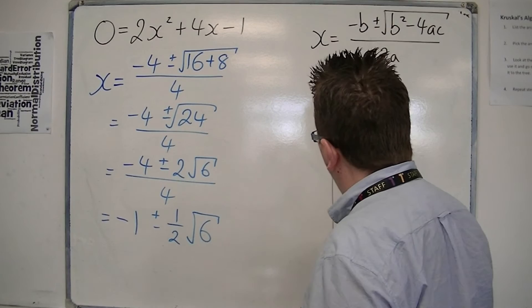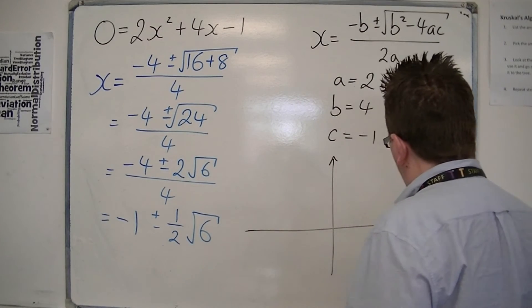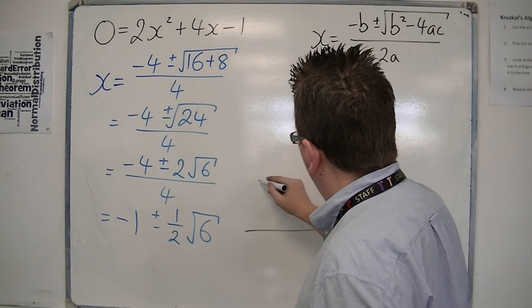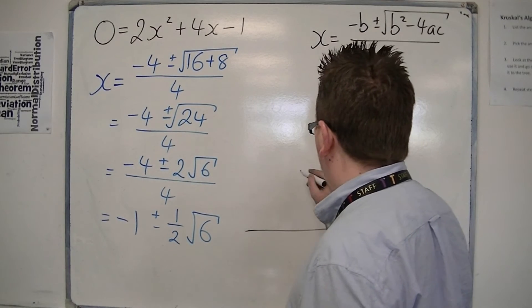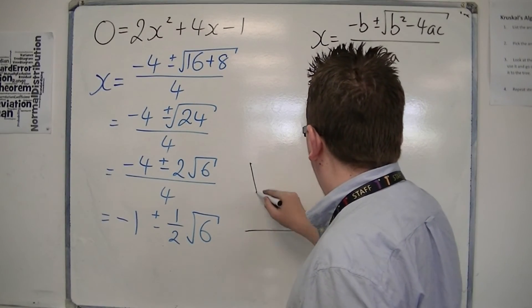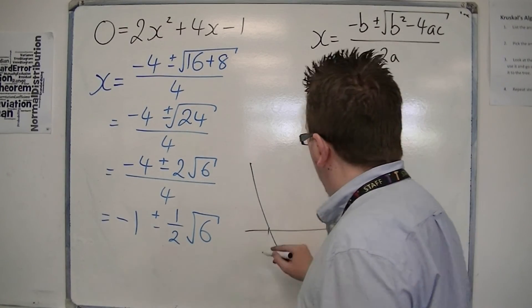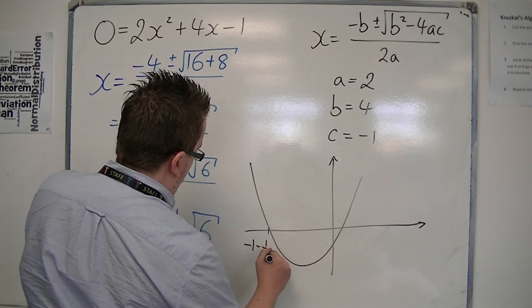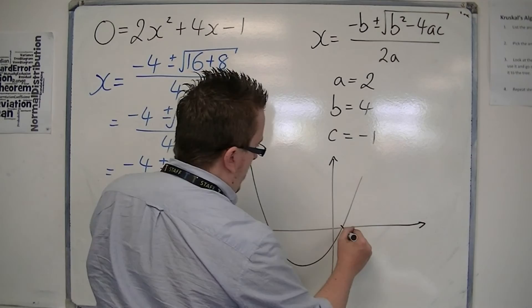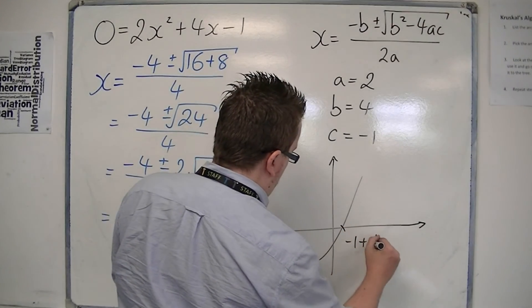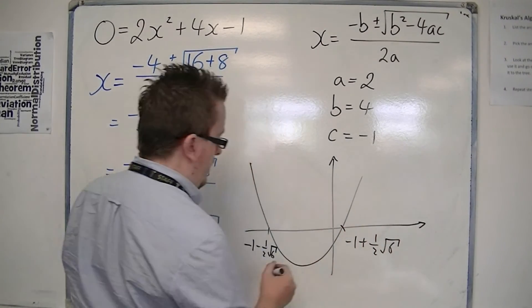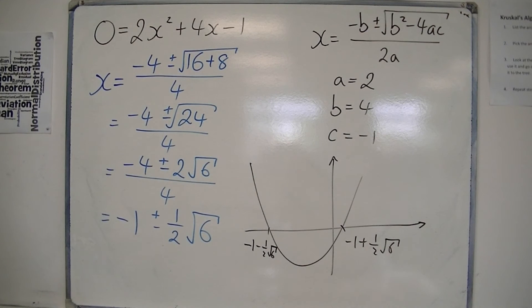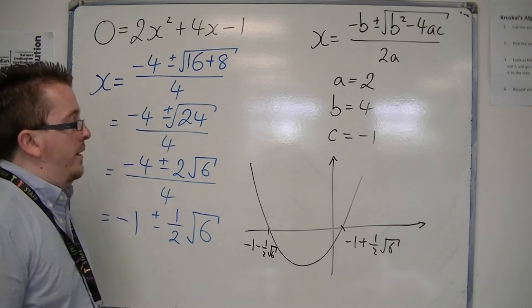So in sketching this curve, we've got minus 1 plus or minus half root 6, so something like this. We've got minus 1 take away a half root 6, and minus 1 plus a half root 6. So that is what the parabola would look like sketch-wise.